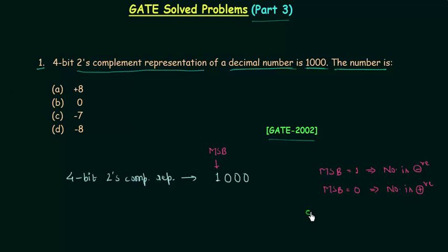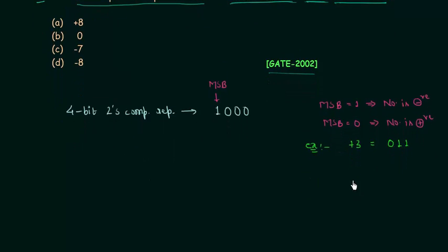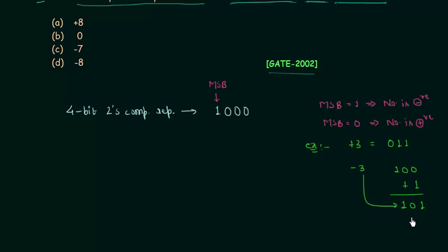For example, plus 3 is represented as 0 1 1. To find minus 3, we take the 1's complement of plus 3, which gives 1 0 0, then add 1, giving 1 0 1. This is minus 3 in 2's complement, and you can see MSB is equal to 1, while for a positive number MSB is equal to 0.